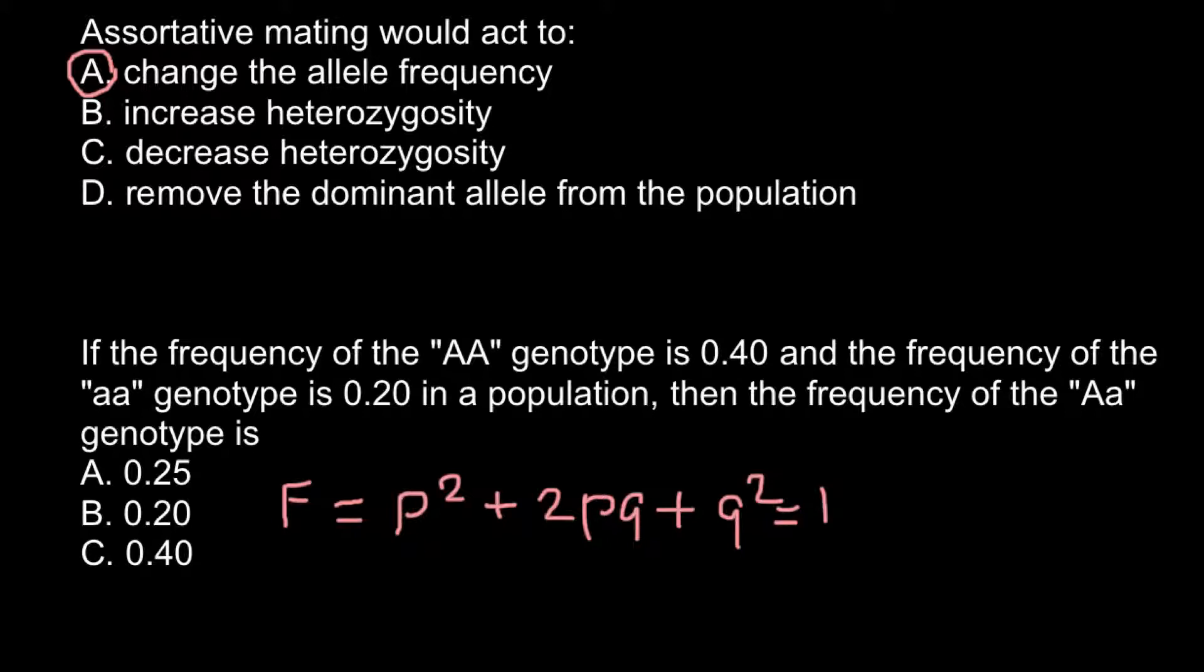And p squared stands for the homozygous dominant genotype, 2pq stands for the heterozygous genotype, and q squared stands for the homozygous recessive genotype. And all the alleles p plus all the alleles q in this formula.